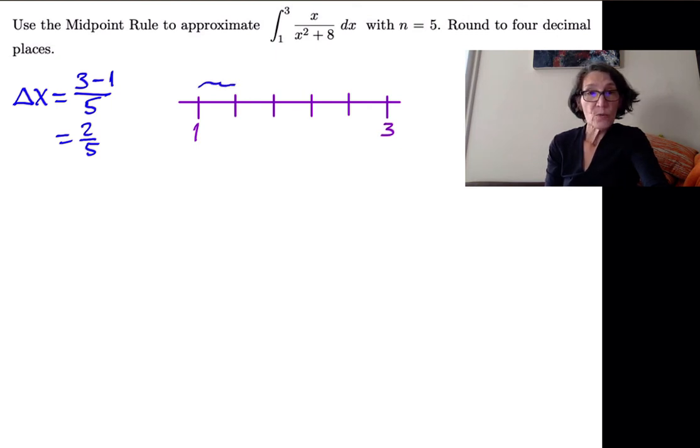So we need to now find those right endpoints so that then we can find the midpoints of each of the subintervals. So the first right endpoint is one plus two-fifths, or five-fifths plus two-fifths. So the first right endpoint is seven-fifths.